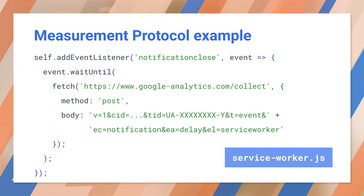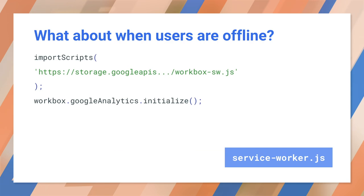Remember that we don't want the service worker to shut down before we complete the POST, so we wrapped this code with event.waitUntil. But that raises the question of how we can send events when the app is offline. We can use IndexedDB to store events when users are offline and send them later when back online. If you use Workbox, this is built in — just use Workbox's Google Analytics module to send your events.